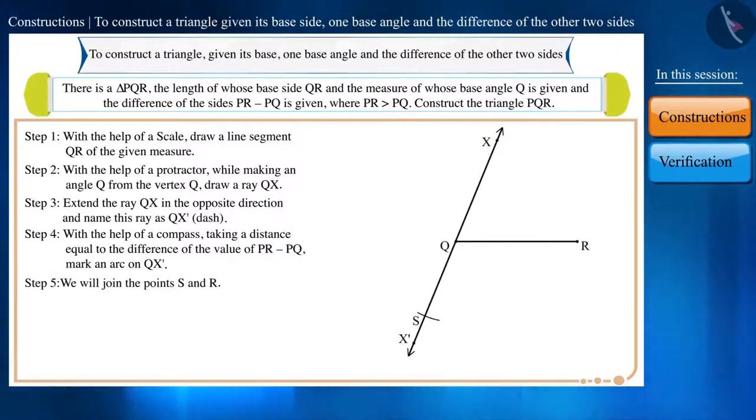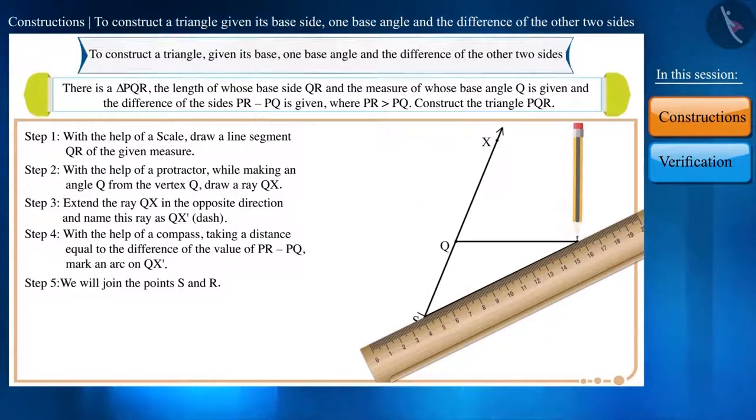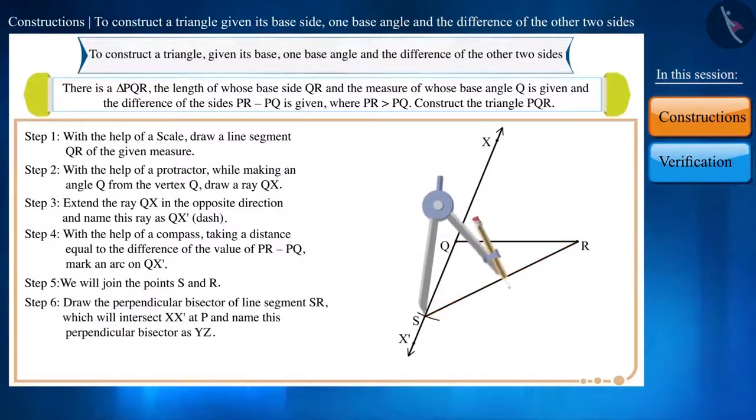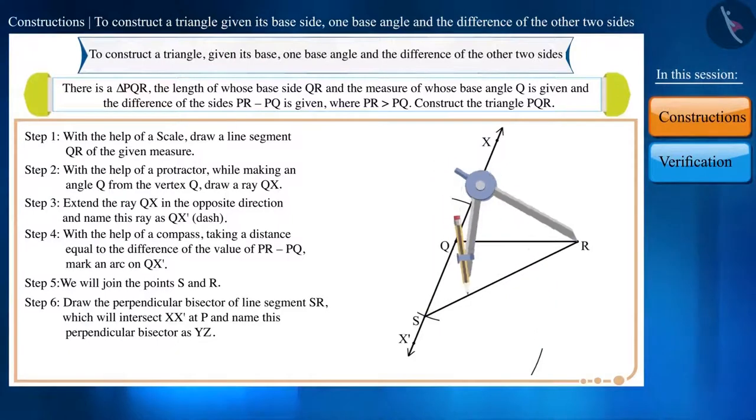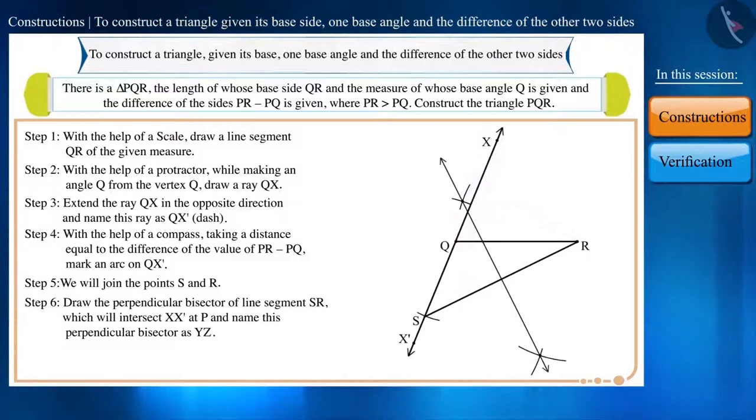Step 5: We will now join the points S and R. Step 6: Draw the perpendicular bisector of line segment SR and we name this perpendicular bisector as YZ.